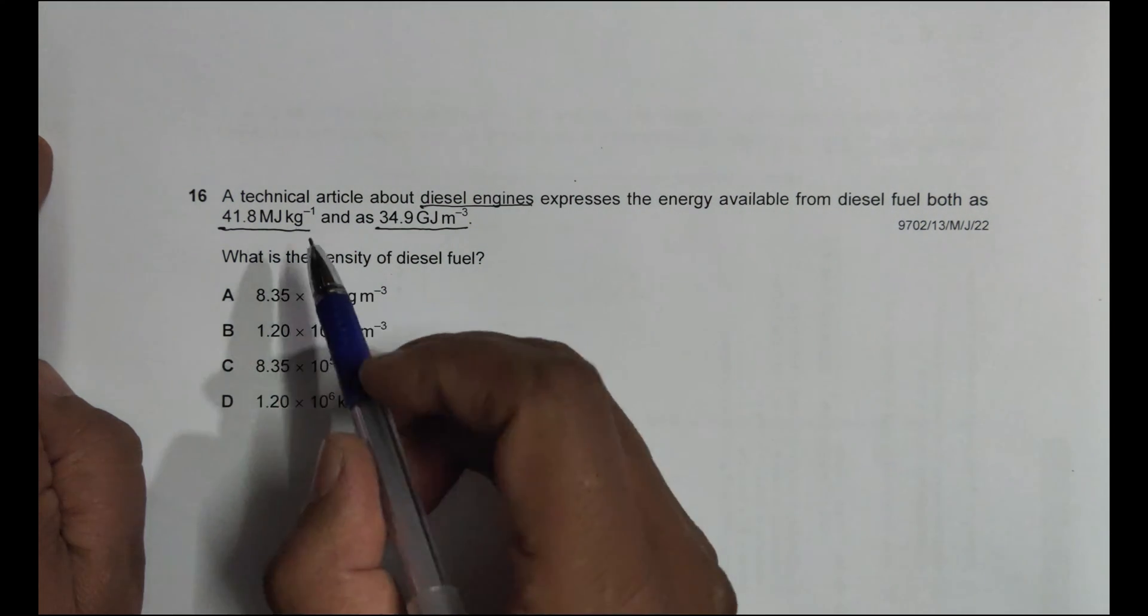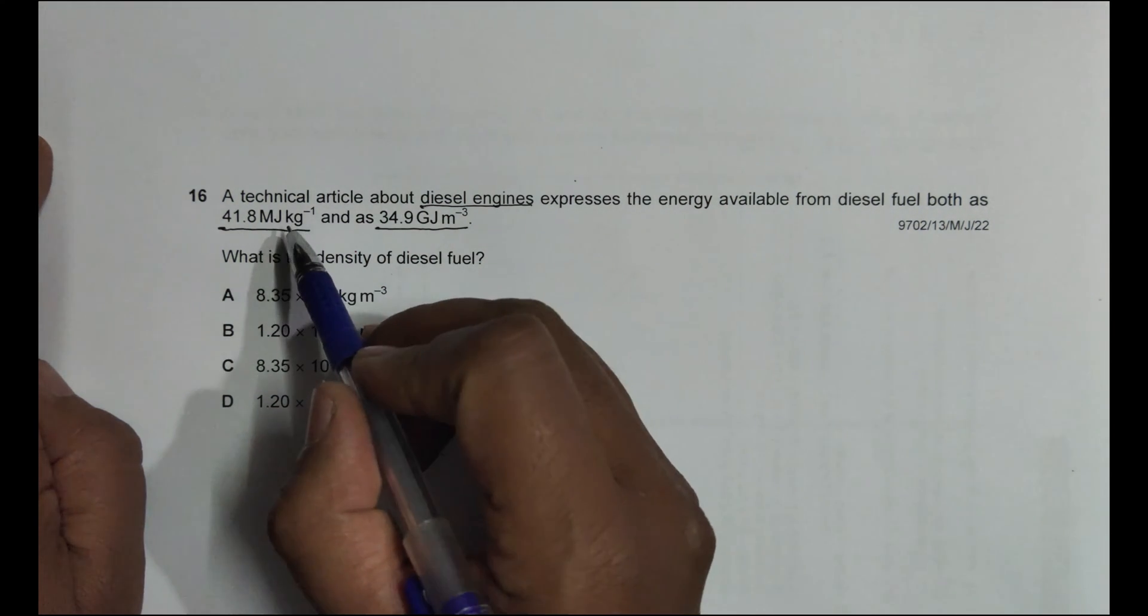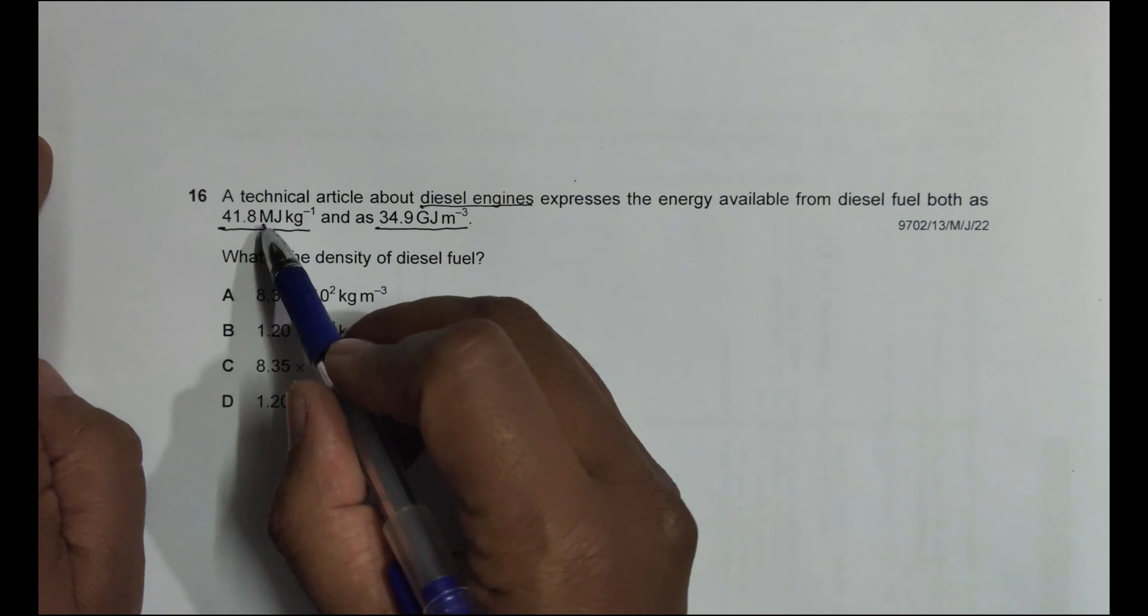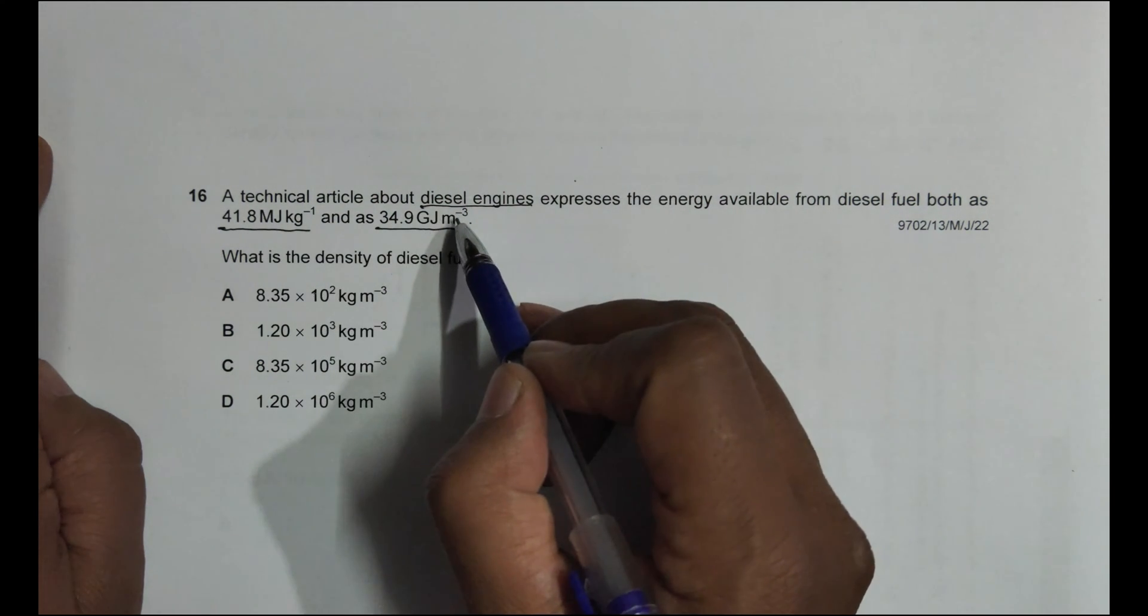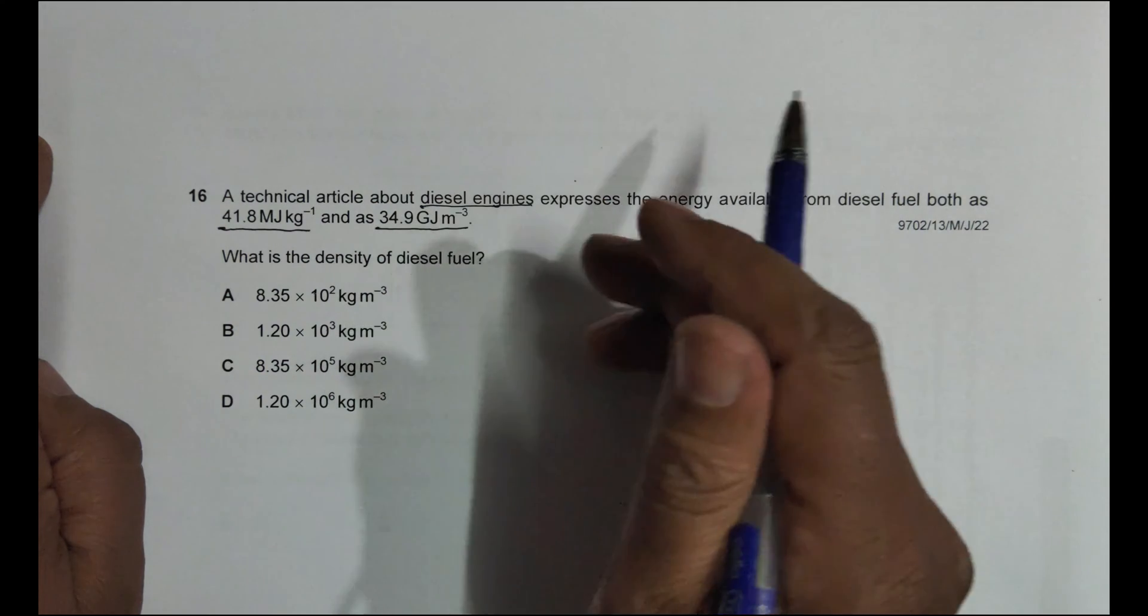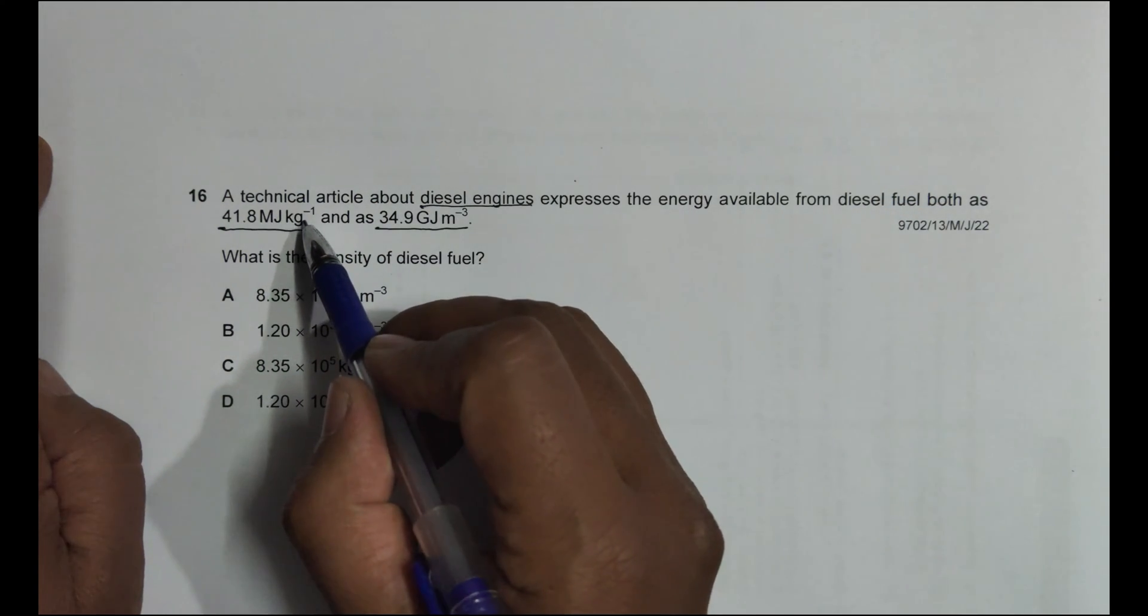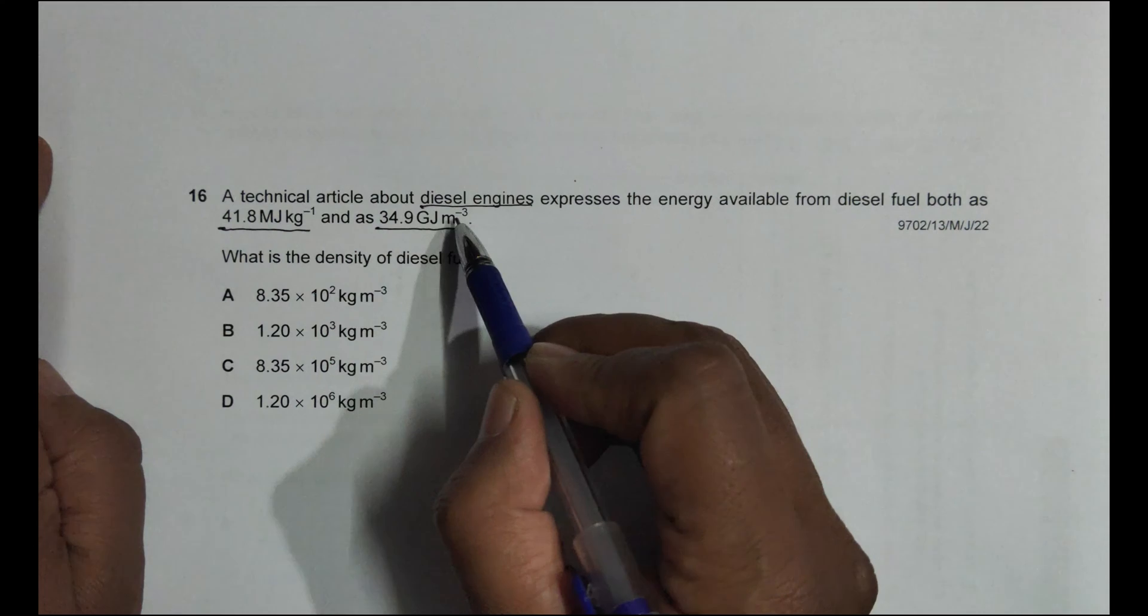Let us find out what would be the mass required for 1 joule and what would be the volume required for 1 joule. So it is to be changed in some standard form. So we will try to find the mass required for 1 joule and the volume required for 1 joule.